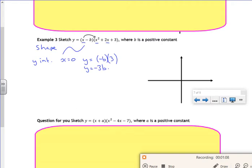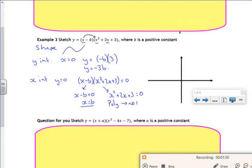Right, so let's look at the x-intercept. So that's when y is 0. So I've got x minus b times x squared plus 2x plus 3 equals 0. So that tells me that x minus b is 0, so x is b. And then I've got this one here which is x squared plus 2x plus 3 equals 0. Now if I stick that into poly, it doesn't work. There's no roots on that bit.